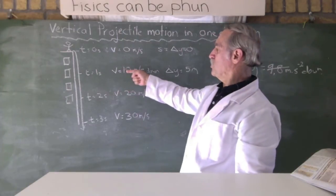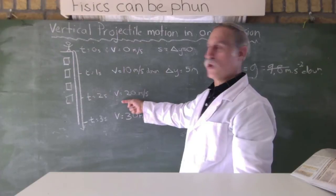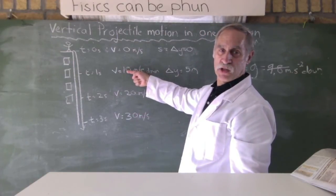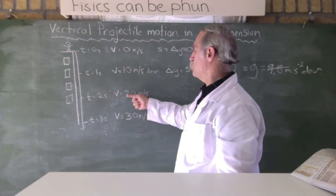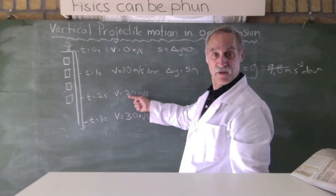Now, look at this. Between time t equals one second and time t equals two seconds. At time one second, it's traveling 10 meters per second. At time two seconds, it's traveling 20. So, what's the average velocity between 10 and 20? 15.